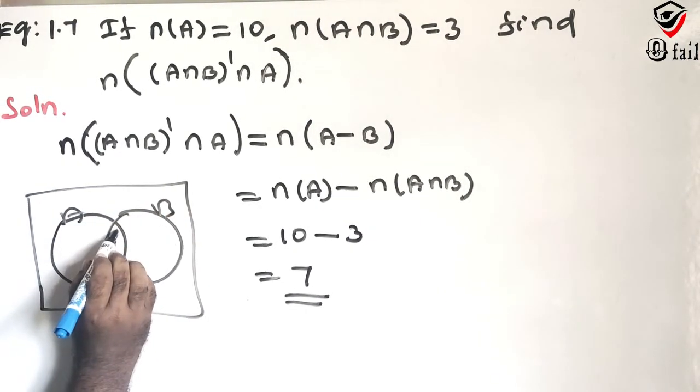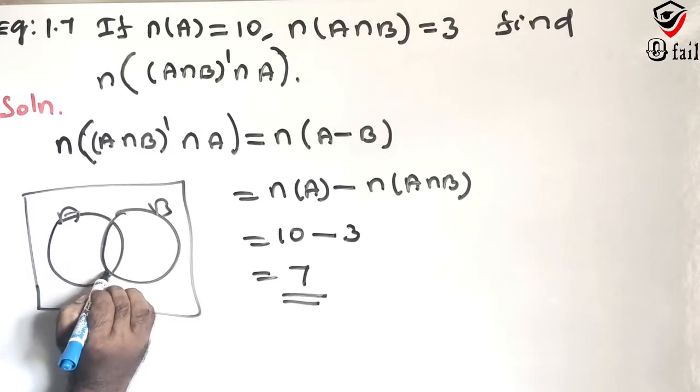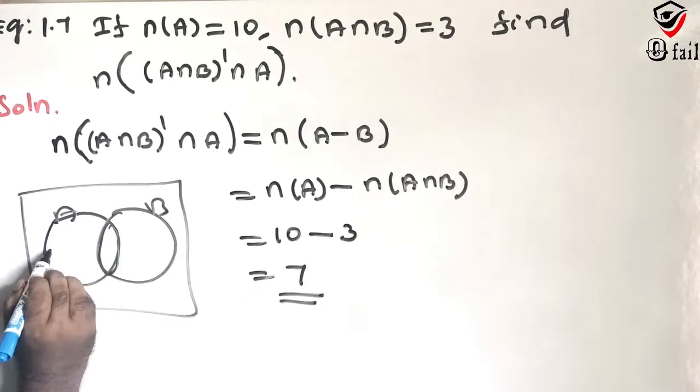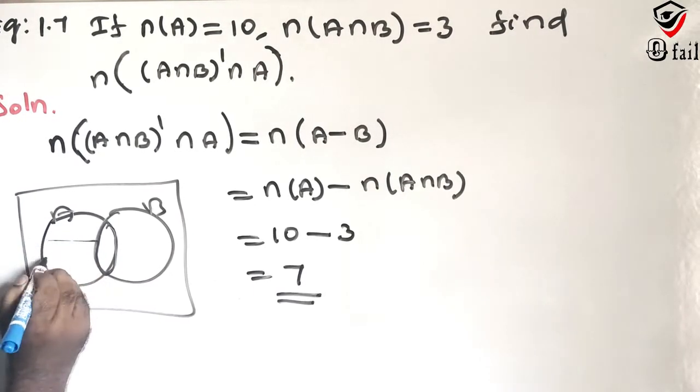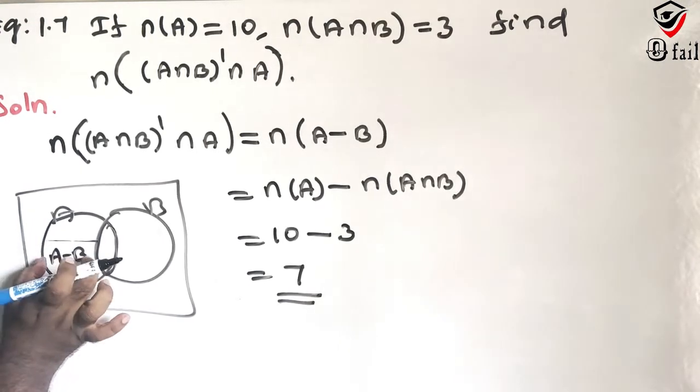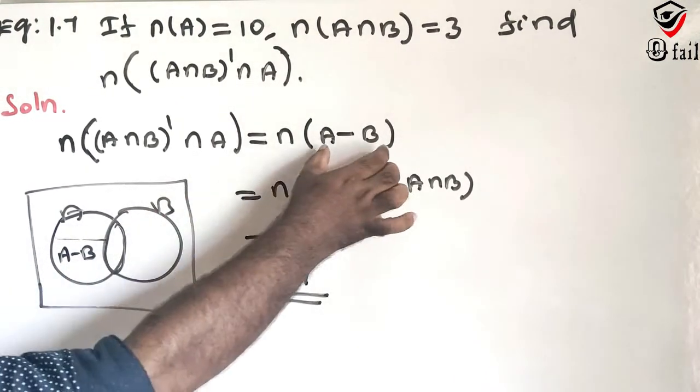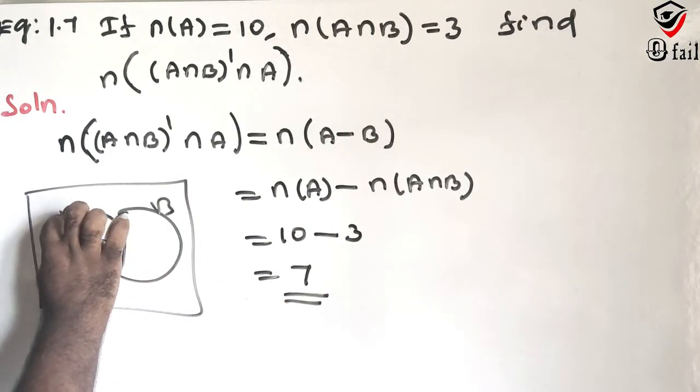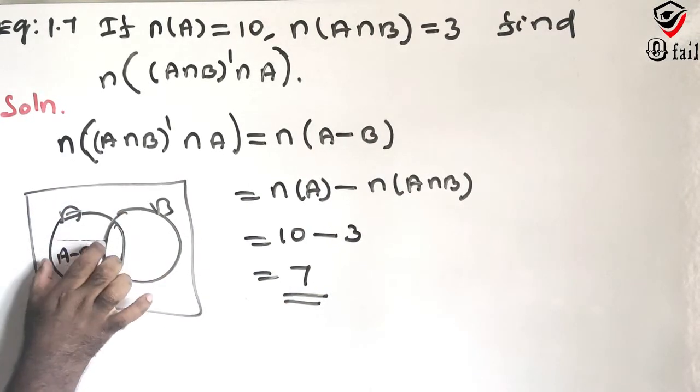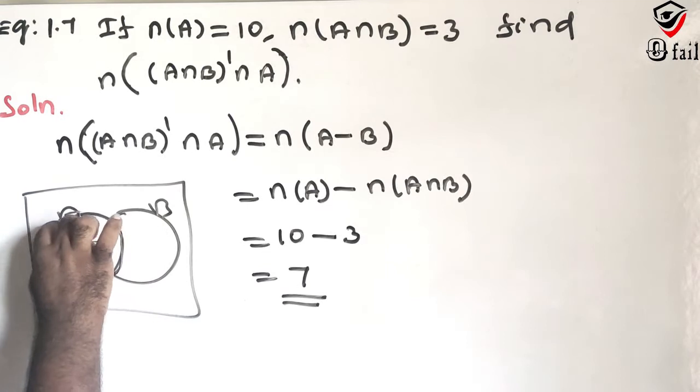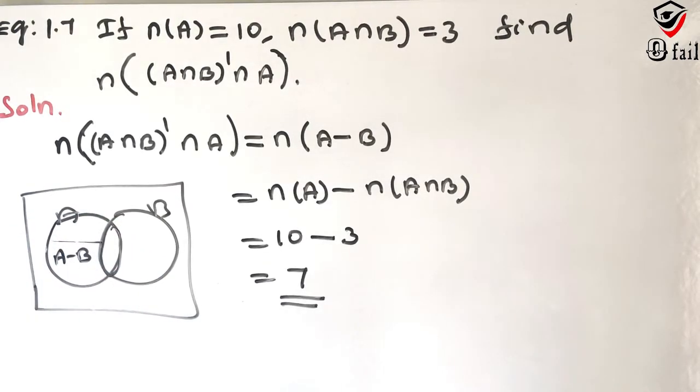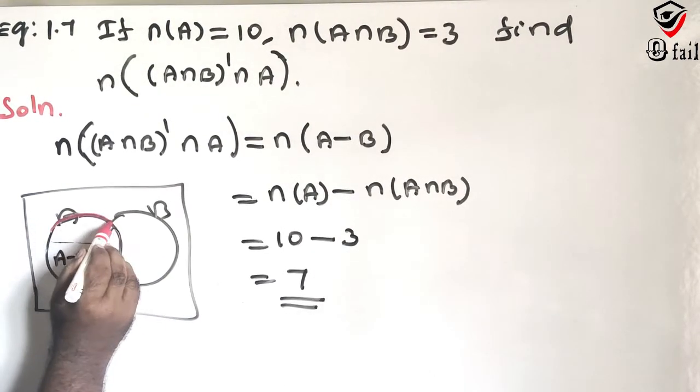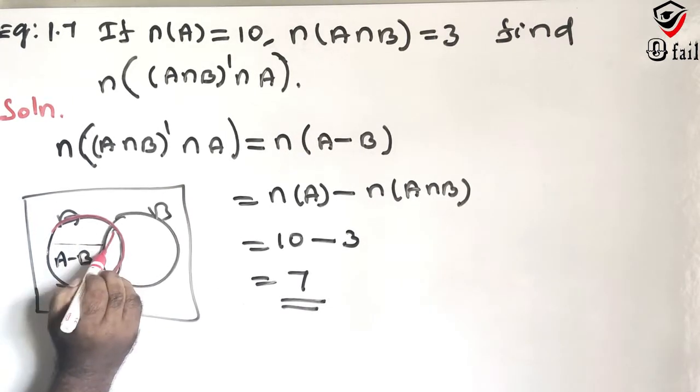You can use the intersection. If you use the difference in total, this is A. This is B. You can draw them. Please make them.